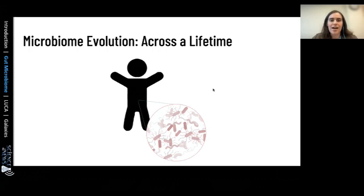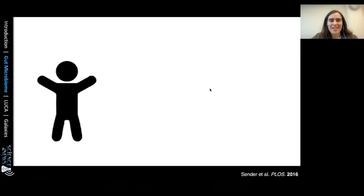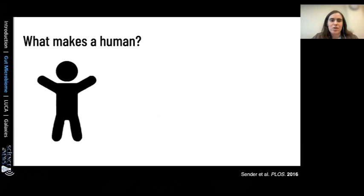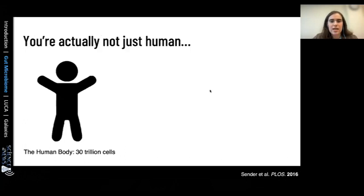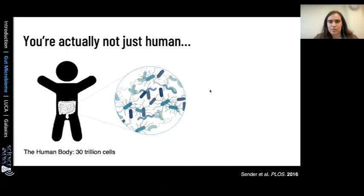You as a human person are made up of building blocks called cells — your human body has about 30 trillion cells. If you stacked 30 trillion people on top of each other, that would be enough to stack about 2.3 million Earths. But you're not just a human — you also have an ecosystem of healthy germs, bacteria and microbes, living inside you, particularly in your gut. You have about 30 trillion bacterial cells constituting your microbiome. These bacterial cells are much smaller than human cells, fitting 30 trillion in the small space of the gut — and each one is its own unique single-celled organism.